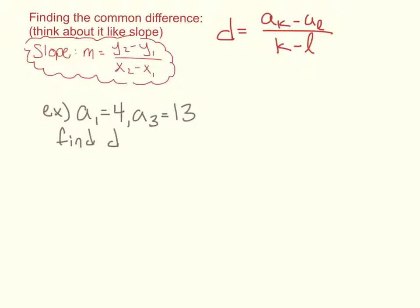So let's do this example together. If a₁ equals 4 and a₃ equals 13, let's find the common difference d. All right, how would I set that up? d equals...